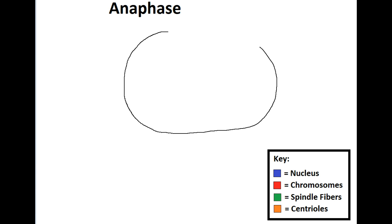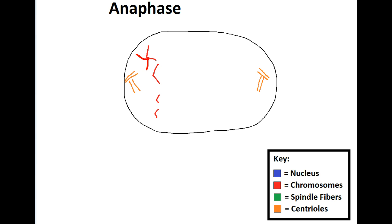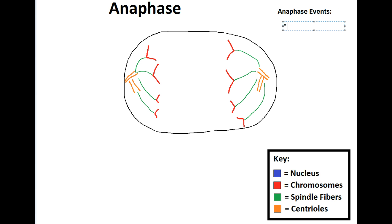Now we're going to talk about anaphase, which is the next phase of mitosis. You're going to notice that the cell is starting to lengthen — it's no longer a circle, it's more oval now. The cell is being pulled apart by the centrioles, which are pulling apart the chromosomes. The chromosomes used to look like an X; now they look like a V, because it's half of the X — the other half was pulled to the opposite side. The chromosomes are pulled to opposite sides of the cell by the centrioles and spindle fibers.